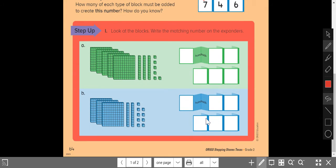Let's go down below. Look at the blocks. Write the matching number on the expanders. This is just like we did earlier. 1, 2, 3, 4, 5 hundreds.